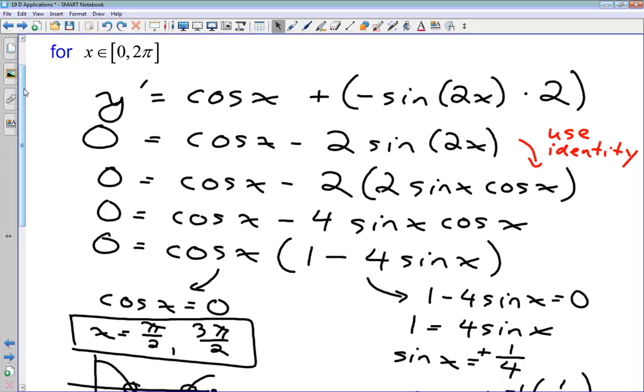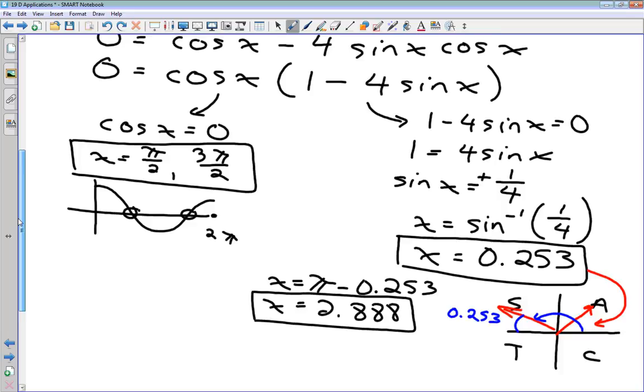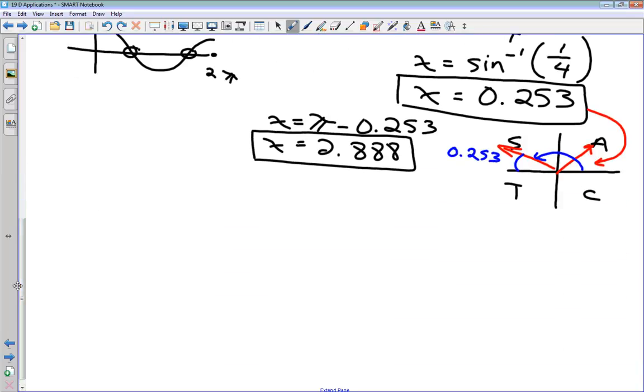So the simplest form of my first derivative is this one right here, before I applied the identity. Okay? That's what I'm going to take the derivative of to get my second derivative. If I take the derivative of this form down here after I've applied the identity, I've got to use product rule, which is a little bit more complicated. So I'm just going to copy that one down here.